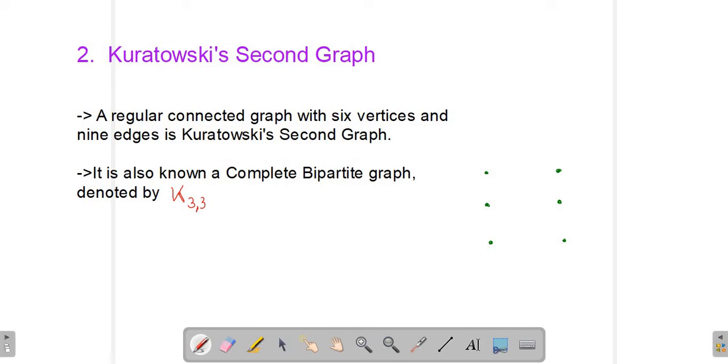So Kuratowski's second graph is a regular connected graph with six vertices and nine edges. It is a regular connected graph with six vertices and nine edges. Here we have six vertices: v1, v2, v3, v4, v5, and v6.